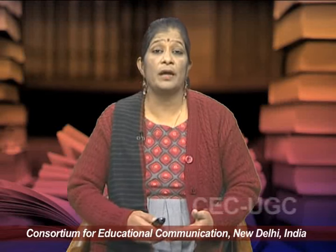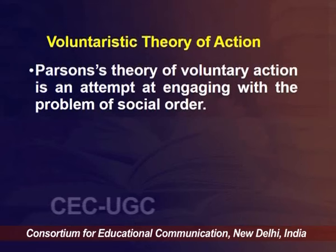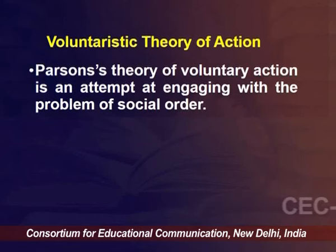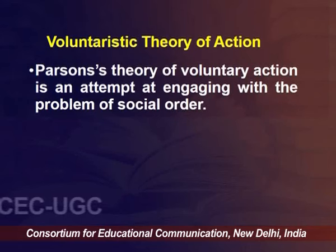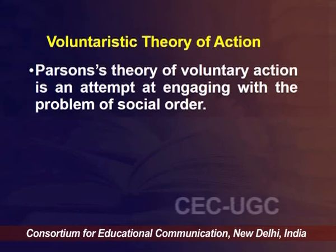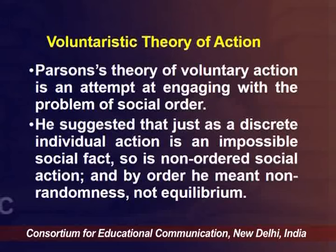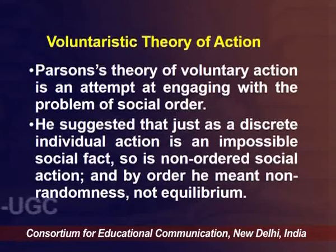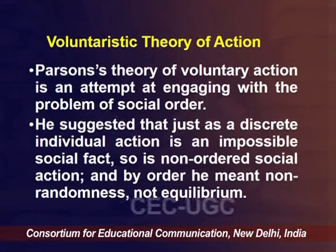We make a concrete effort to ensure we are motivated to perform that action in order to attain the goal. Parsons' voluntaristic theory is an attempt at engaging with the problem of social order. Influenced by Durkheim and other functionalists, he was trying to understand how order could exist in society. Parsons suggests that just as a discrete individual action is impossible in an unordered chaotic manner, there has to be an equilibrium and an orderness.